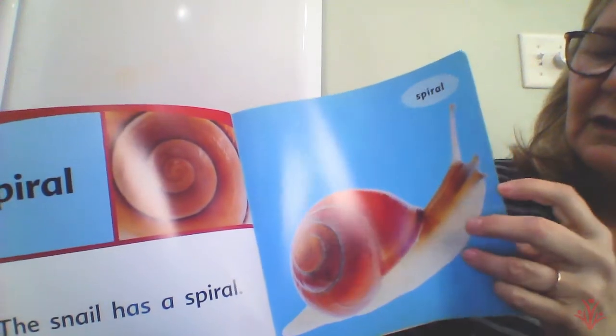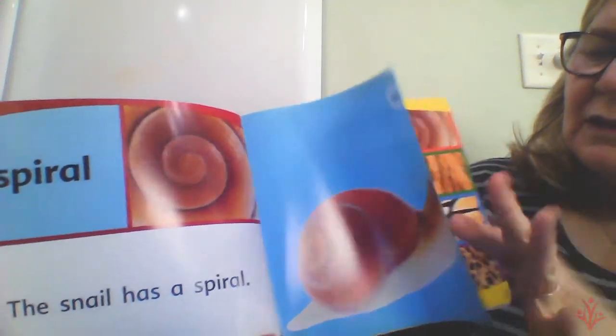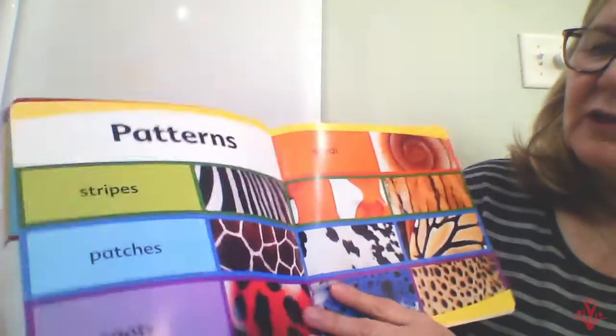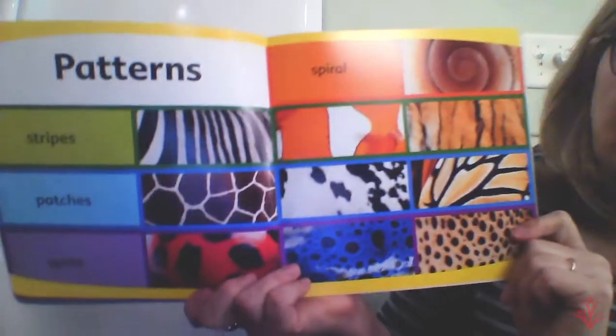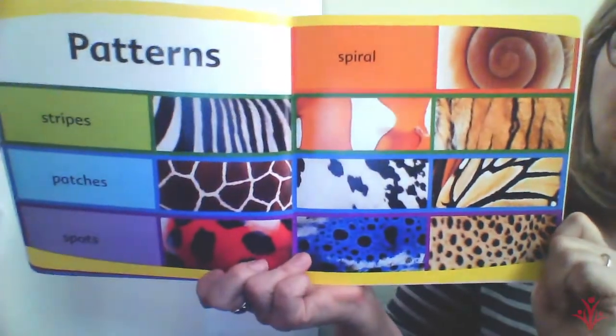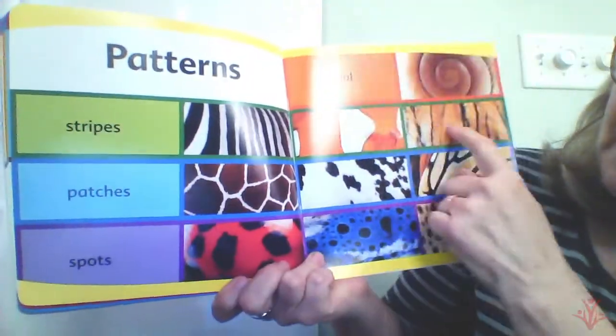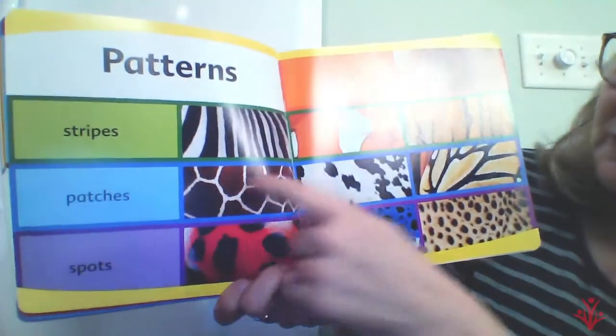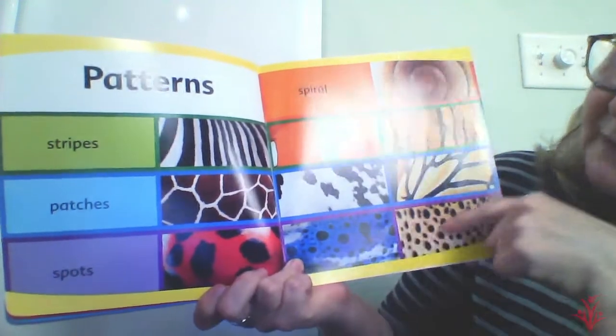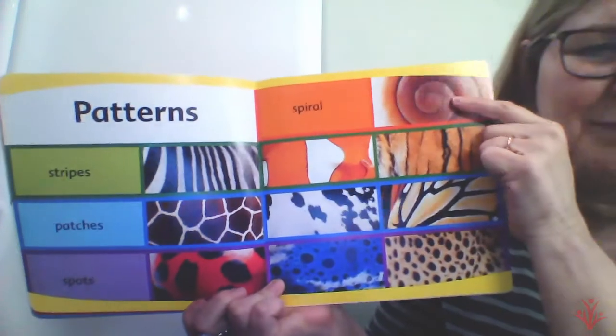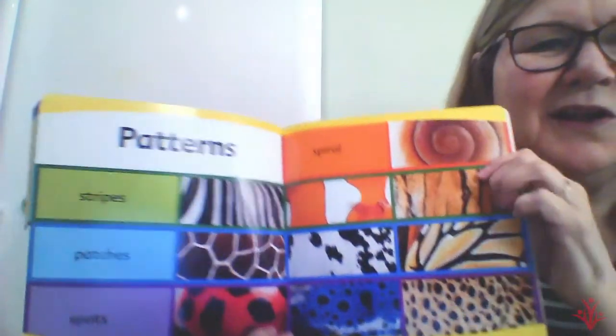Well, let's see — one last page. Patterns. So there are different ways to look at patterns: there's stripes, there's patches, there's spots, and there's a spiral. Those are patterns, my friends. All right, stay safe — until next time, bye-bye Lilac Room friends.